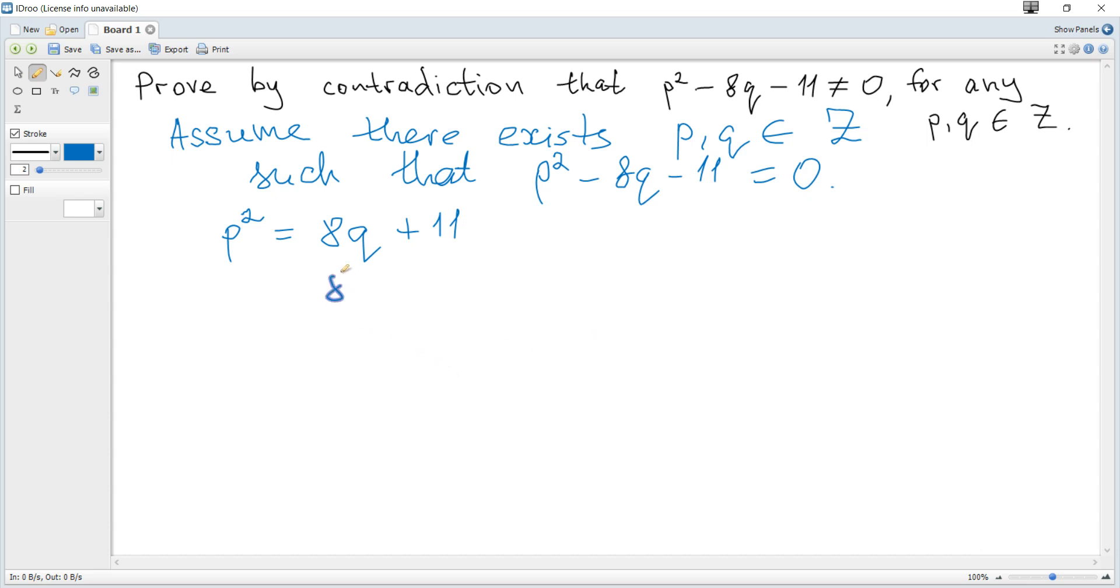We can see that 8Q is even for any Q ∈ integers. Even multiplied by integer is always even. And hence 8Q + 11 becomes even plus odd, so it's odd.